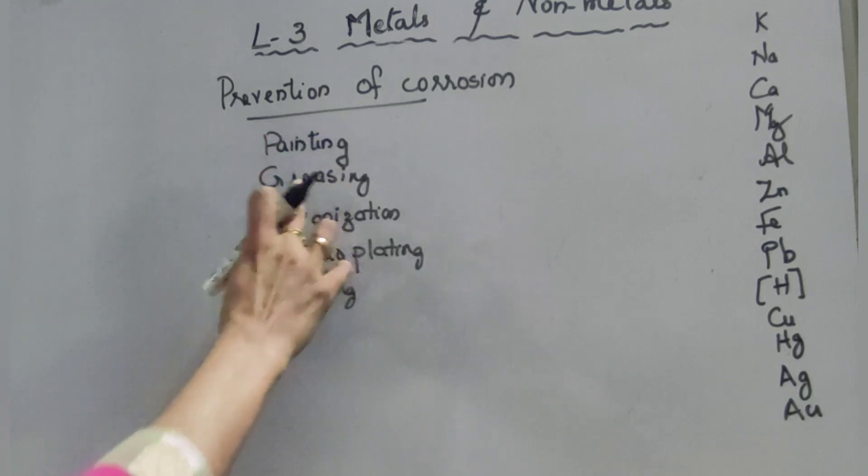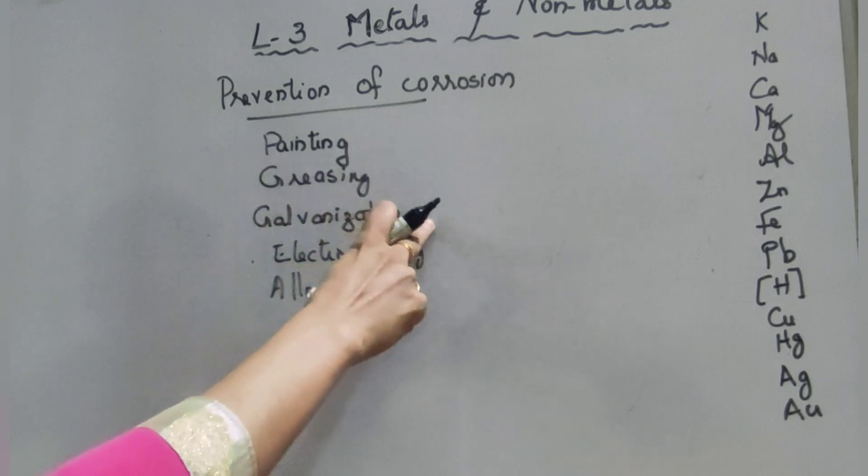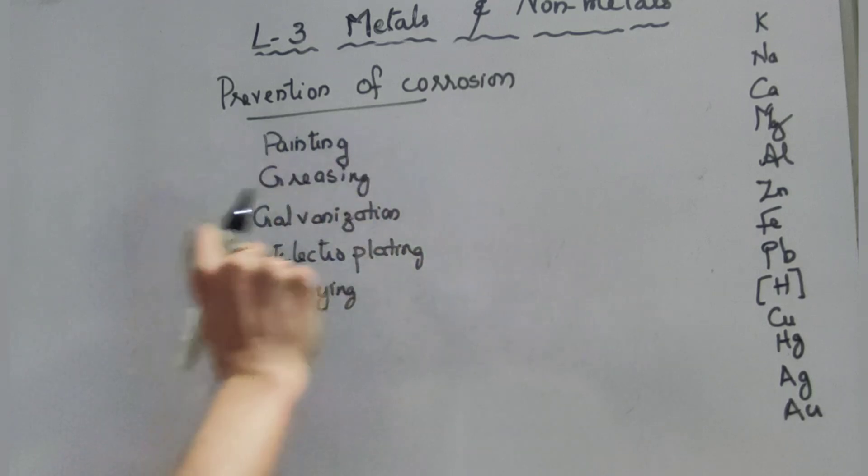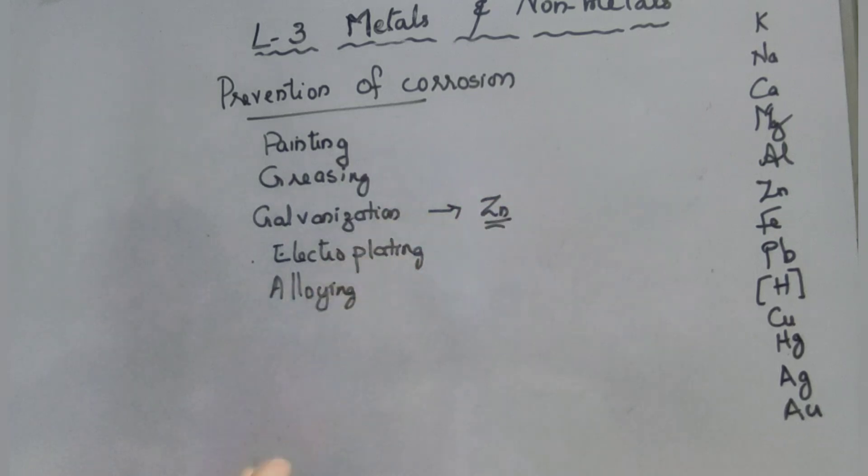Painting we know, greasing also we know. Galvanization means galvanization is a method of protecting steel and iron from rust by coating them with a thin layer of zinc.